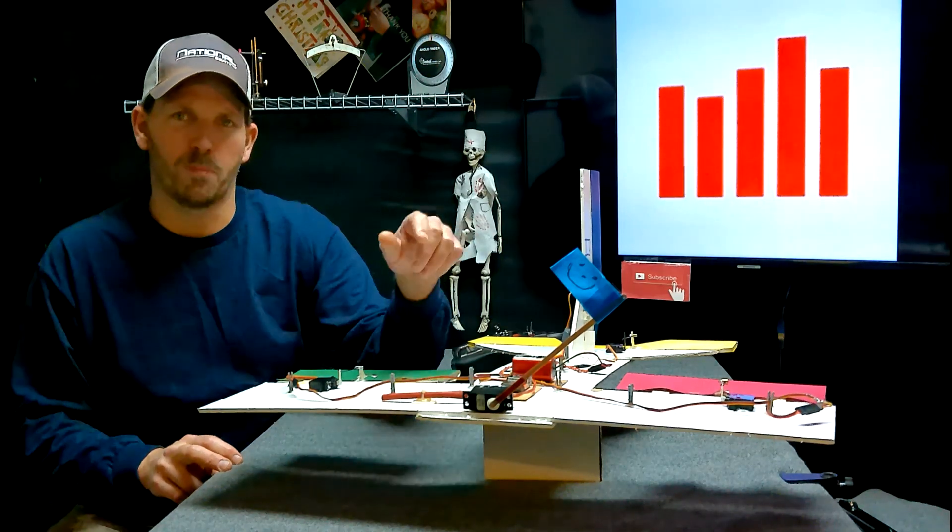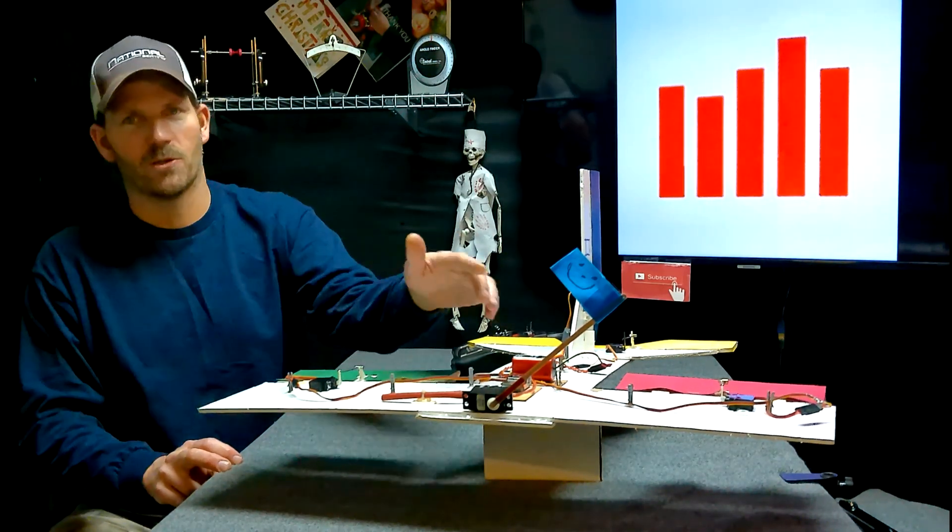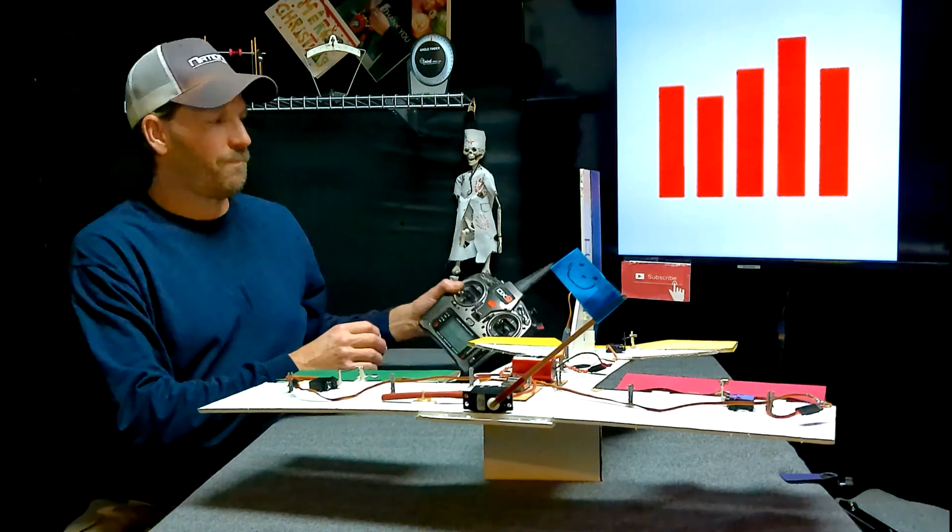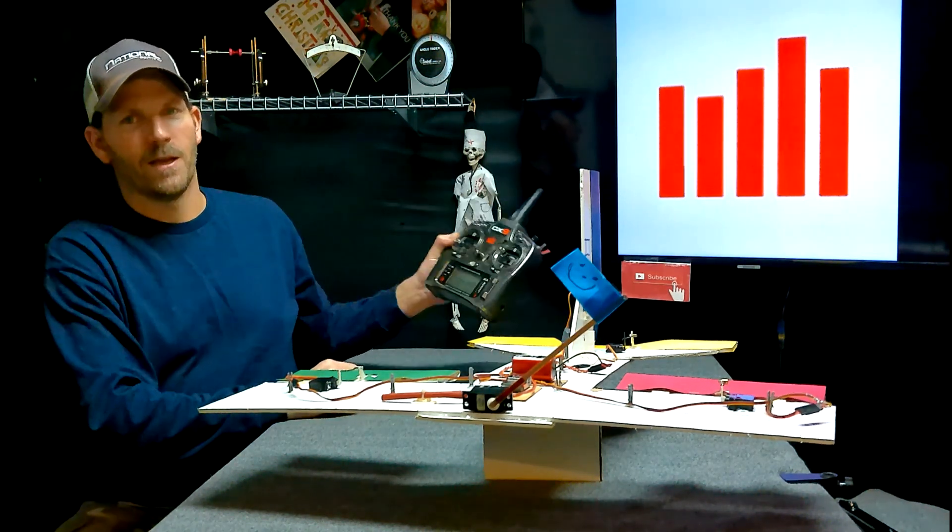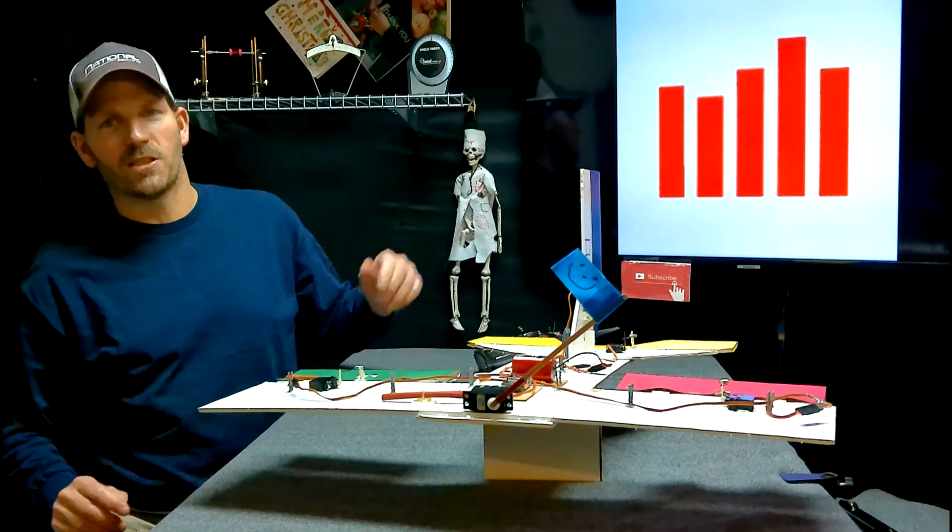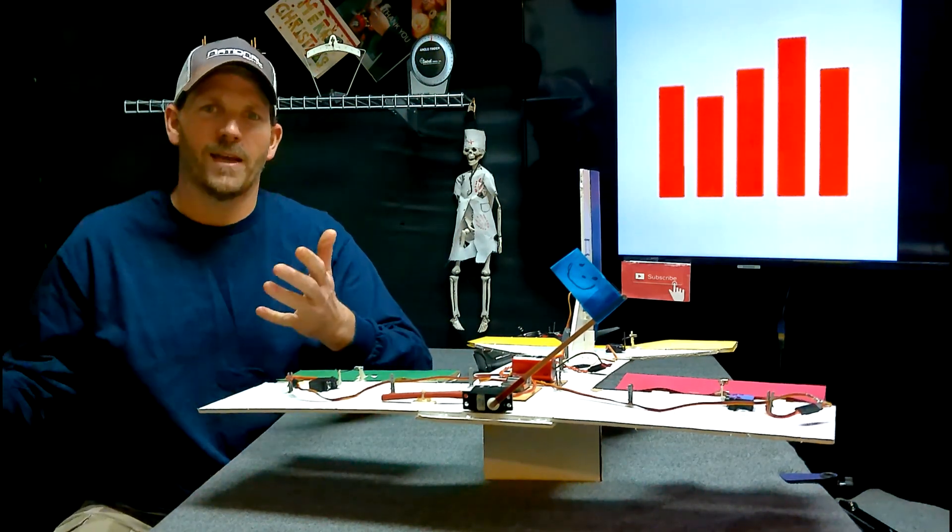Anyways, this little blue flag is connected to a servo and it represents the throttle. Full speed and no speed. But I get many, many questions. How am I making that happen?